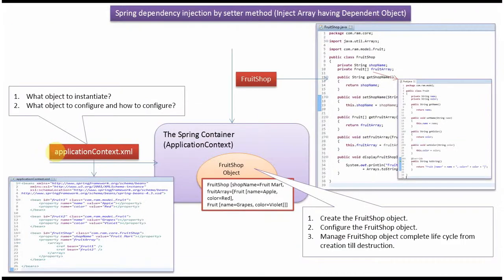The Spring configuration file specifies what objects to instantiate, what objects to configure, and how to configure them. In this example, fruit one object, fruit two object, and fruit shop object should be created by Spring container using Spring dependency injection by setter method. The Spring container reads this configuration file, creates and configures the fruit shop object, and manages the complete lifecycle of the fruit shop object.